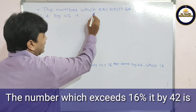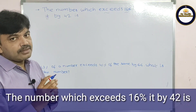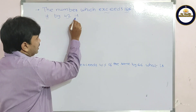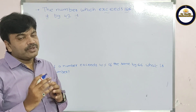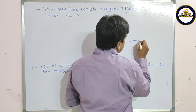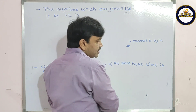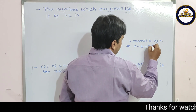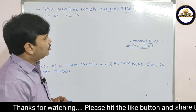The number which exceeds 16% of it by 42 — we are finding the number. To solve this problem you have to know the formula: a exceeds b by x means a minus b equals x.